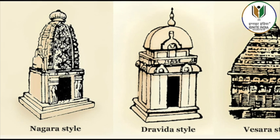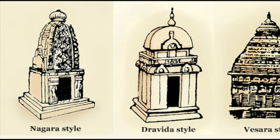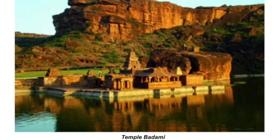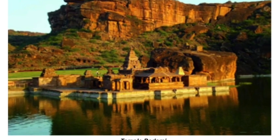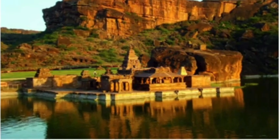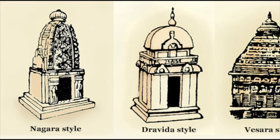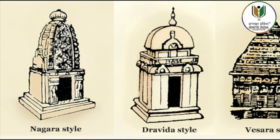The most elaborate of all Chalukyan temples at Pattadakal, made in the reign of Vikramaditya II (733–744) by his chief queen Lokamahadevi, is the Virupaksha temple. Another important temple from this site is the Papanatha temple, dedicated to Lord Shiva.